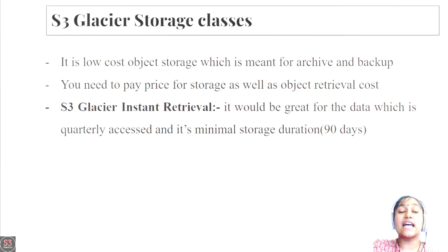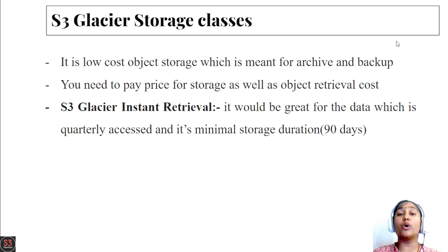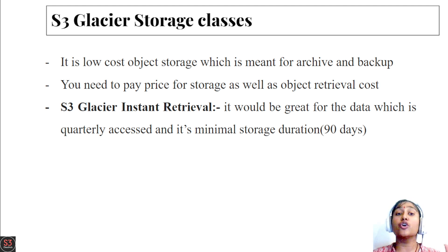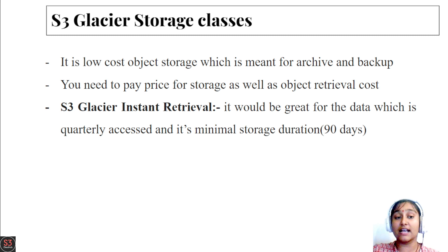The third storage class is S3 Glacier — a low-cost object storage meant for archiving and backing up data. You pay for both storage and object retrieval cost. There are three flavors: Glacier Instant Retrieval, Glacier Flexible Retrieval, and Glacier Deep Archiving.